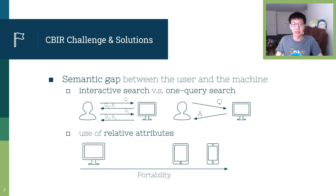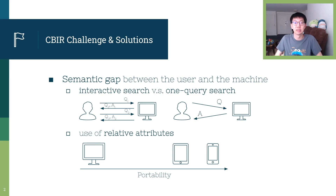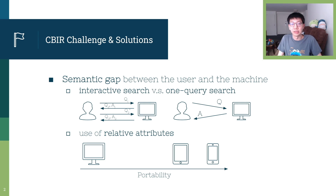A key challenge of the CBIR task is to bridge the gap between the user's high-level concept and the machine's low-level representation of images. In traditional web search, users issue text queries which need to be understood by the machine to return search results. In order for the user to issue fine-grained queries, researchers have studied interactive search, which allows the user to provide additional information regarding the target iteratively. It has been established that semantic relative attributes can facilitate the refining process.